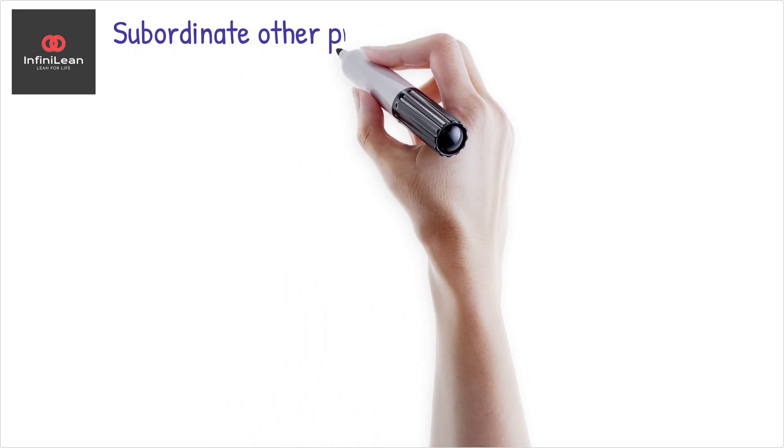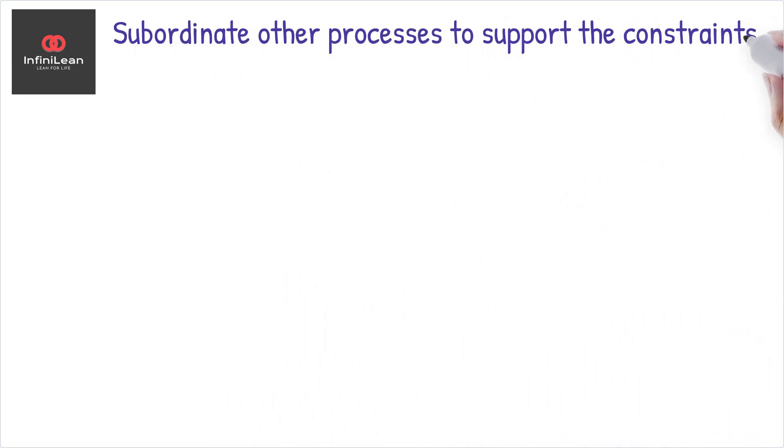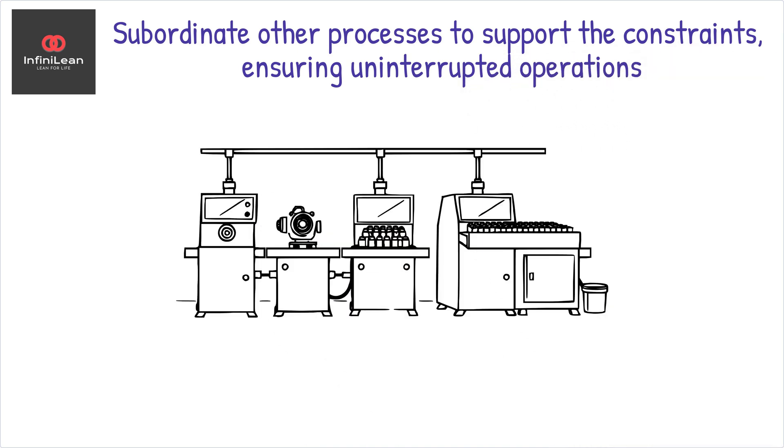Next, every other process must be subordinated to support the constraint and ensure uninterrupted operation. This might mean adjusting schedules or workflows to ensure that the constraint remains the focal point of operations.